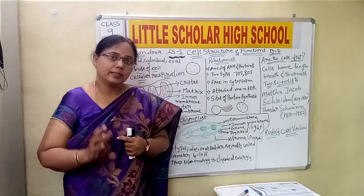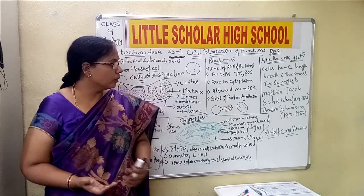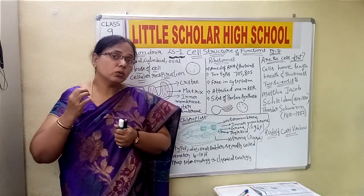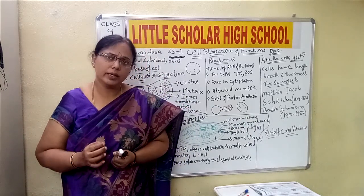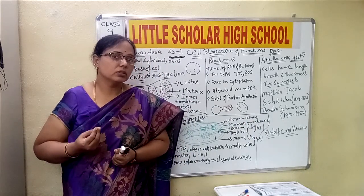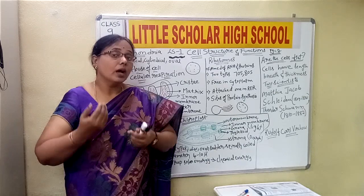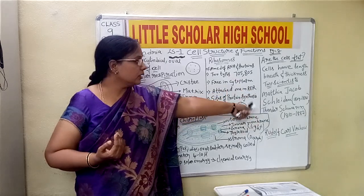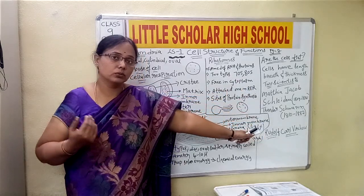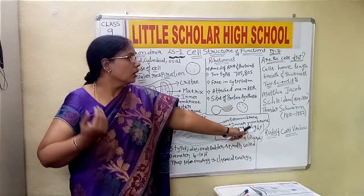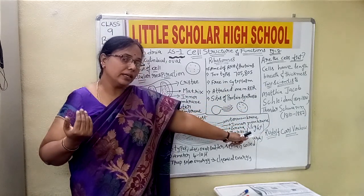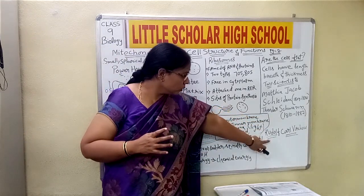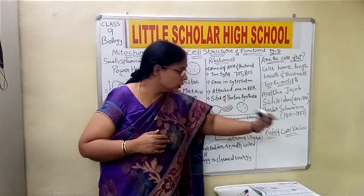For the cell theory to emerge, it took 200 years from when Robert Hooke was the first person to observe the cell under the microscope. After Hooke, it took 200 years for scientists to propose the cell theory. These two scientists successfully stated that all plants and animals are made up of cells and have a nucleus.